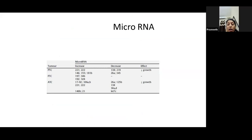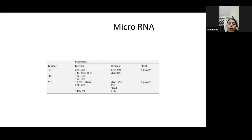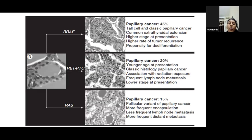MicroRNAs have recently been implicated in thyroid cancer. MicroRNAs cause inclusion of exons that should be deleted, promoting cell proliferation. Some microRNAs show increased expression and some show decreased expression. Key microRNAs to remember: in papillary thyroid carcinoma, miR-221 and miR-222; in follicular thyroid carcinoma, miR-192 and miR-197; in anaplastic thyroid carcinoma (ATC), miR-17-92.